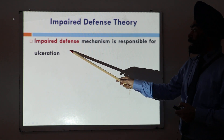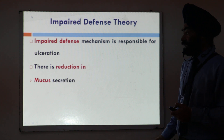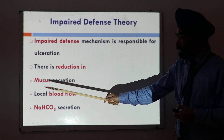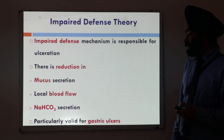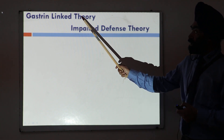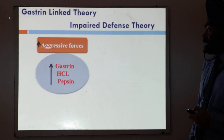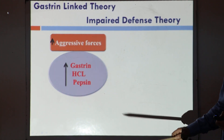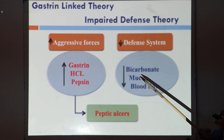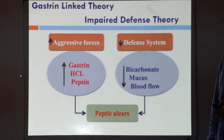The impaired defense theory says that there is an impairment in the protective forces — an impairment in the defense mechanism — which is responsible for the development of ulcers. There is a reduction in mucus, reduction in blood flow, and reduction in bicarbonate secretion, leading to ulcer development. This theory is particularly valid for gastric ulcers. Ultimately both theories are interlinked: increased aggressive forces such as gastrin, HCL, and pepsin, combined with decreased defense mechanisms including bicarbonate, mucus, and blood flow, together produce peptic ulcers.